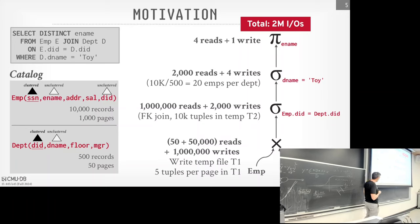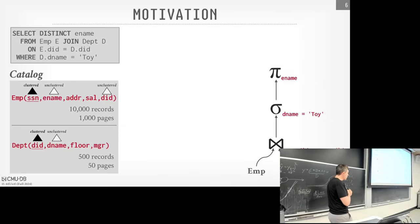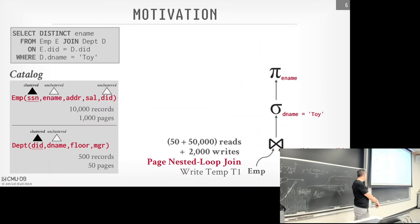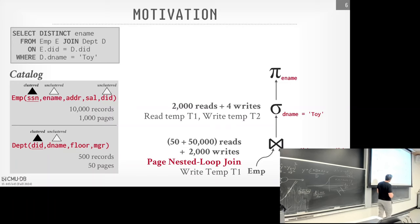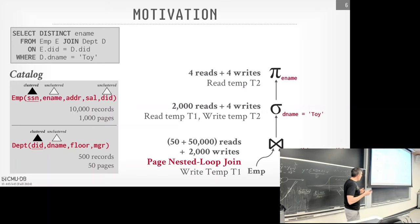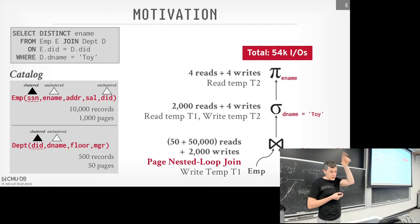How can our query optimizer reduce this IO cost? The most obvious thing: we have a Cartesian product, which is almost always the worst. Unless someone explicitly asks for a cross join, we never want that. We can replace it with a block-based nested loop join, and the amount of data we write out after the join is significantly less. We feed this into our filter operator, which reads less data. Now we're down to 54,000 IOs.